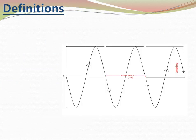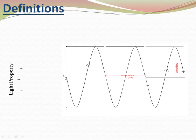Now, the basics of microscopy. The microscope works on light. Light travels in a straight line but in a waveform, as the figure is showing. Light travels in a waveform in a straight line, and since it is a wave, light has certain properties.